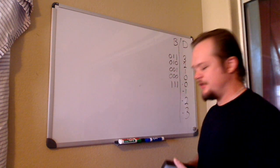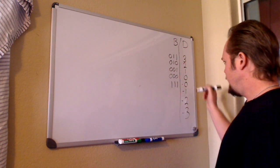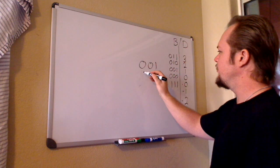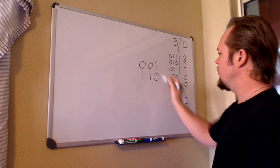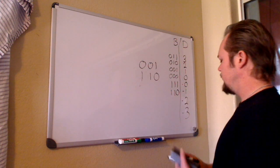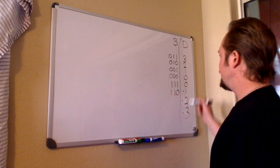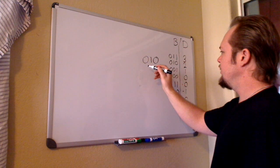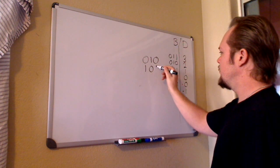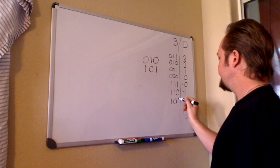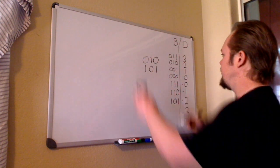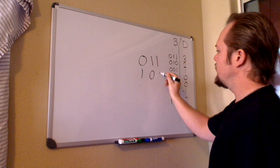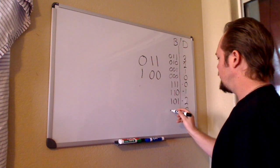Let's run through the rest. Here's negative one — here's our positive one: zero, zero, one. We invert it, it becomes one, one, zero. Negative two: here's positive two, zero, zero, one, zero — invert the numbers: one, zero, one — that becomes our negative two. Negative three: positive zero, one, one — we change it to one, zero, zero — that is now our negative three in one's complement.